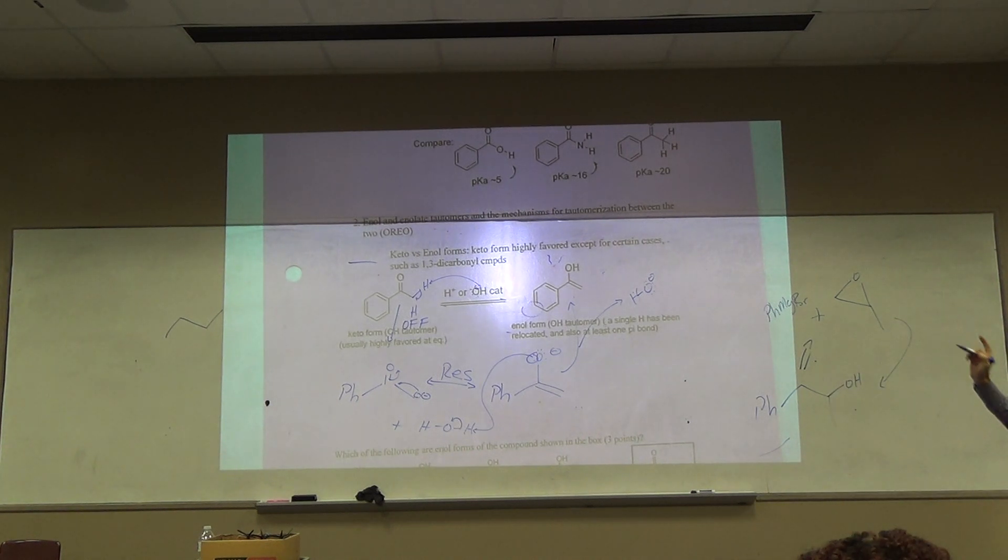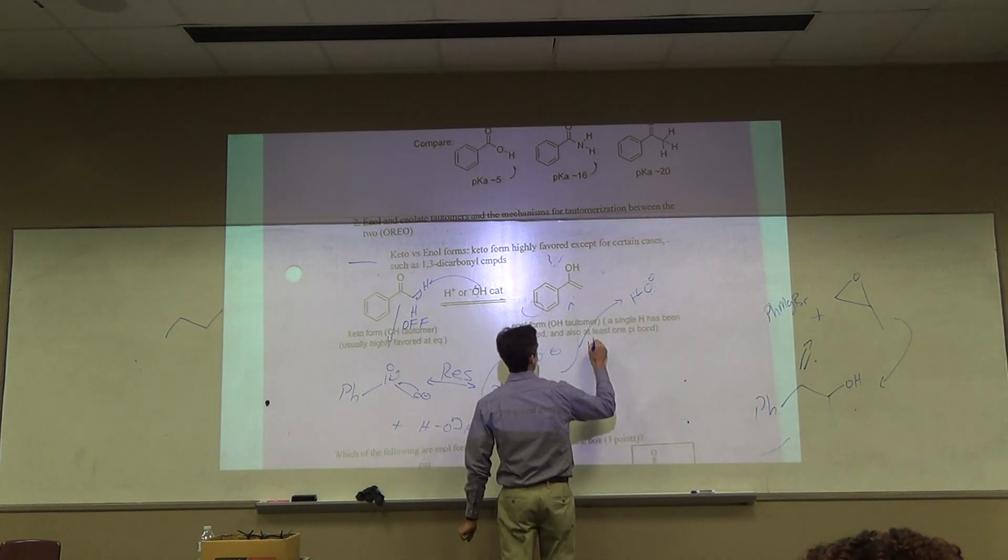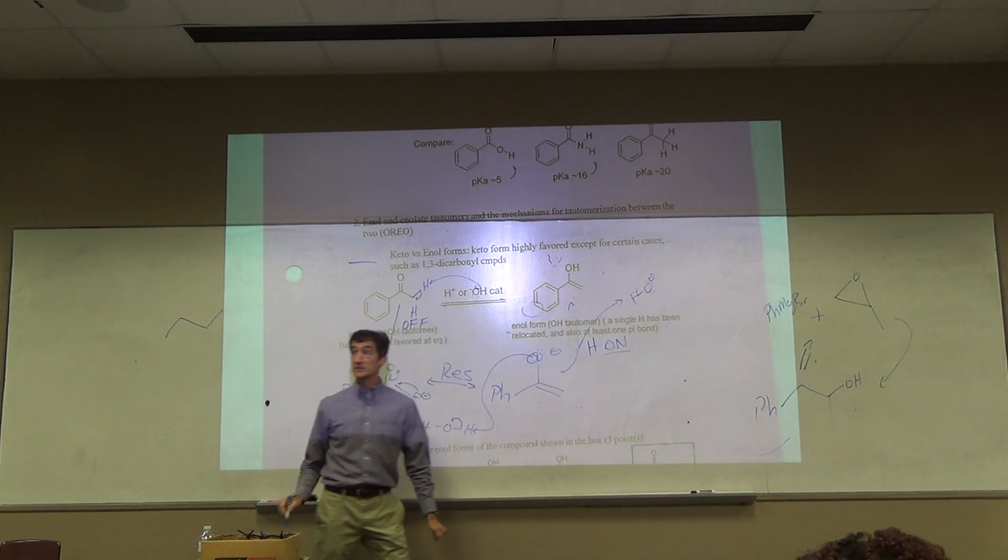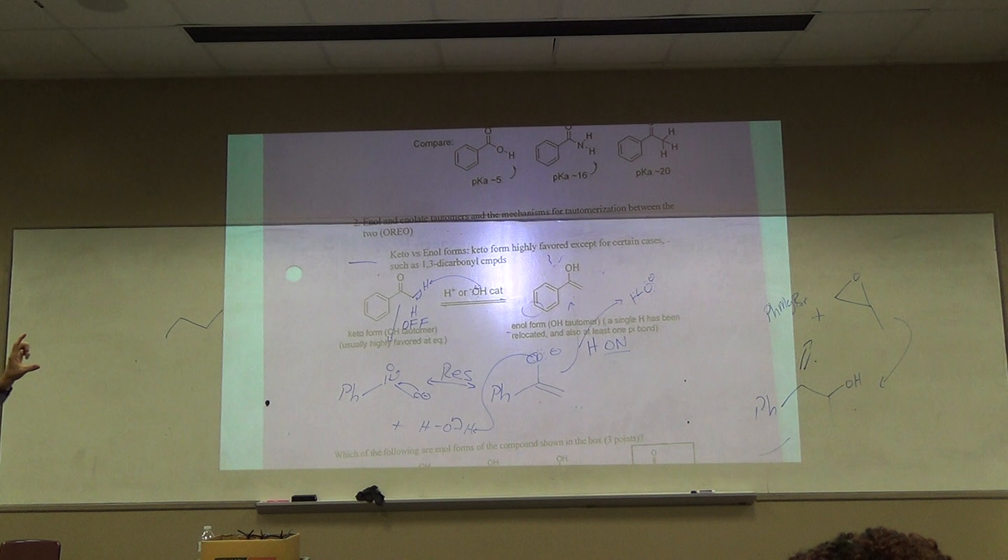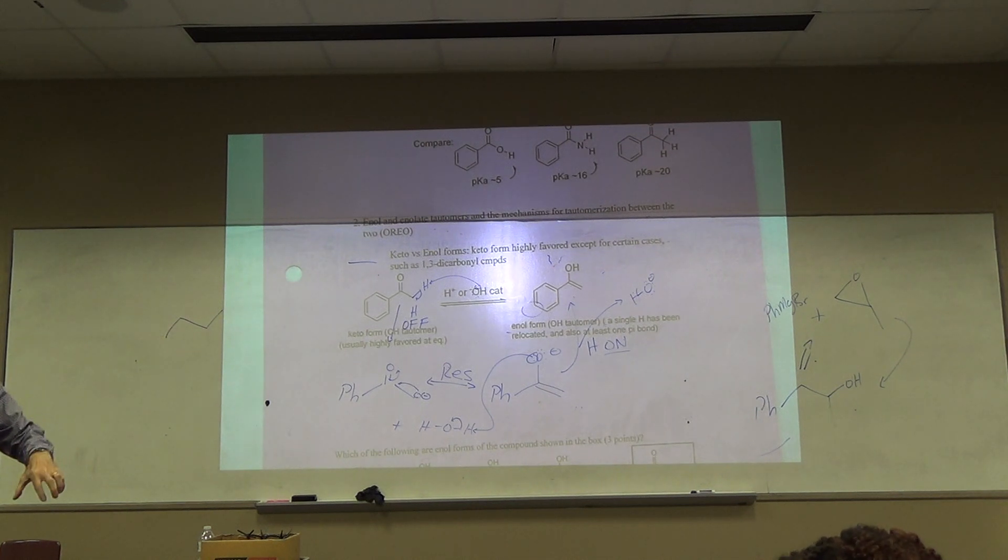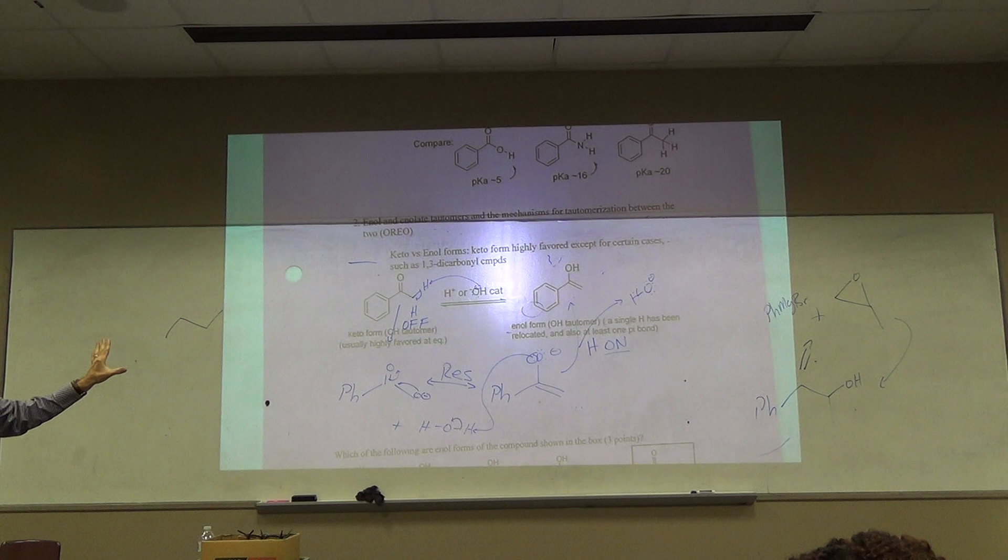We just did a tautomerization using hydroxide as catalyst. What did we do in the last step? We put the H back on. That's the final O of OREO. If we were doing acidic conditions here, what would the first O stand for? On. On. Because under acidic conditions you put protons on. You would do resonance and then the final O would be off. Try the tautomerization mechanism under acidic conditions on your own.